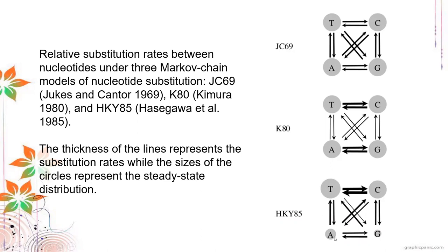For example, T to C and C to T tend to change a lot, so they have much lower penalty scores. Mutations like A to G are less common. A tends to change more to T than to G, so the scoring for T to A is slightly lower than the scoring for A to G. That's generally how these scoring matrices came about.